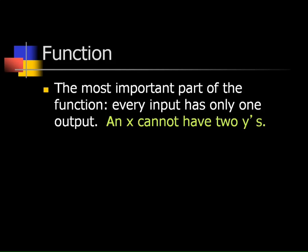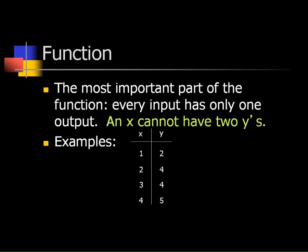An x cannot have two different y's. For example, here's a relation — a group of ordered pairs: (1, 2), (2, 4), (3, 4), (4, 4).